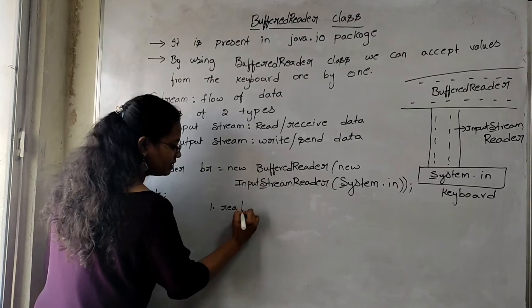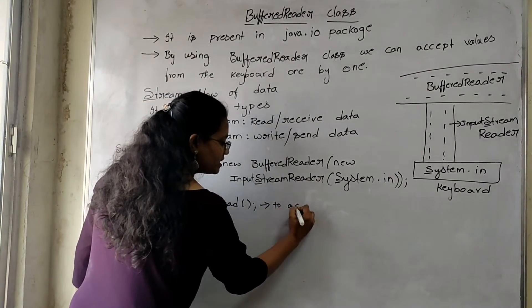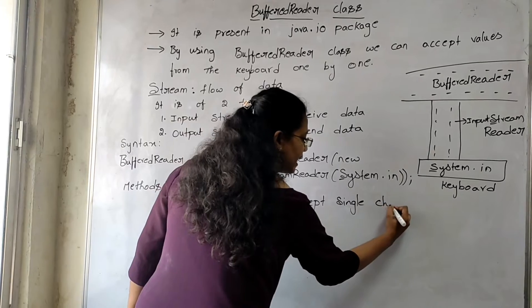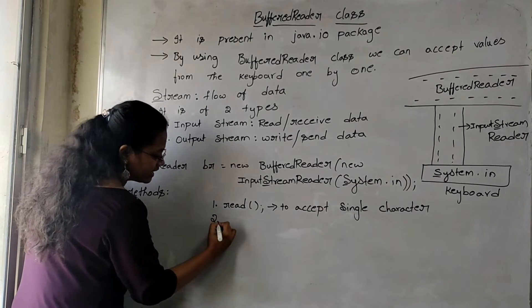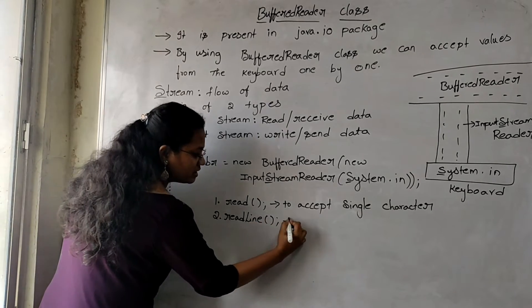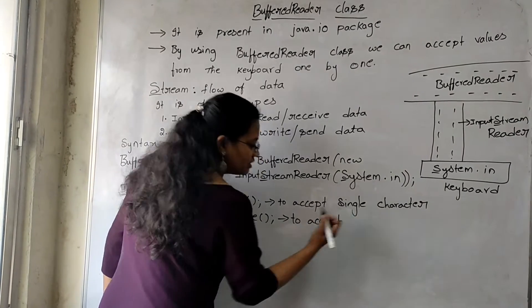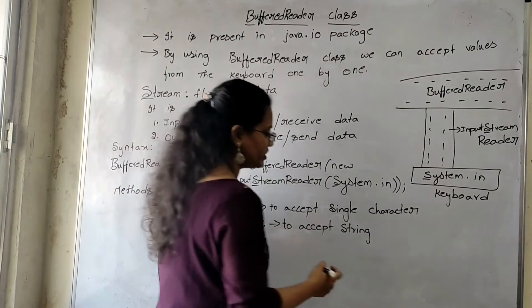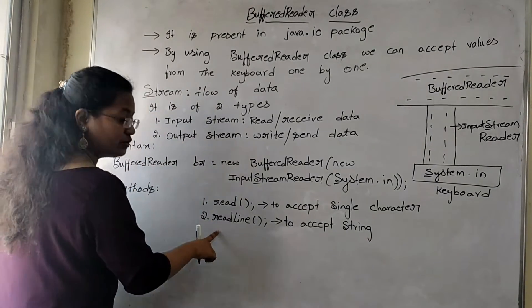The first method is the read() method, which is used to accept a single character. When you are going to accept a single character, then we are going to use the read() method. The second method is the readLine() method. By using this readLine() method, we can accept a String — a single line String. Only one line of String will be accepted by using the readLine() method.